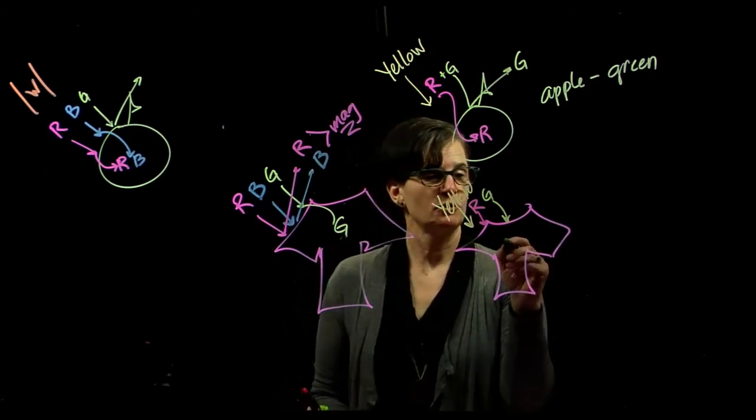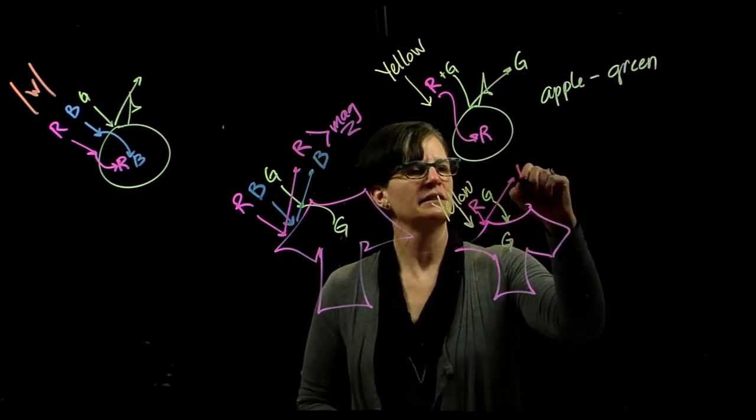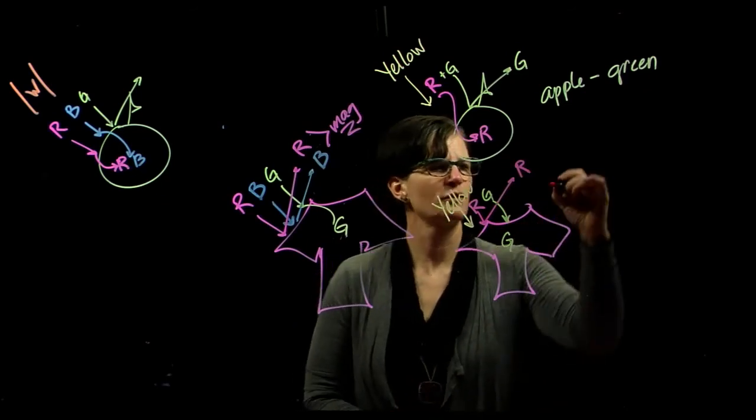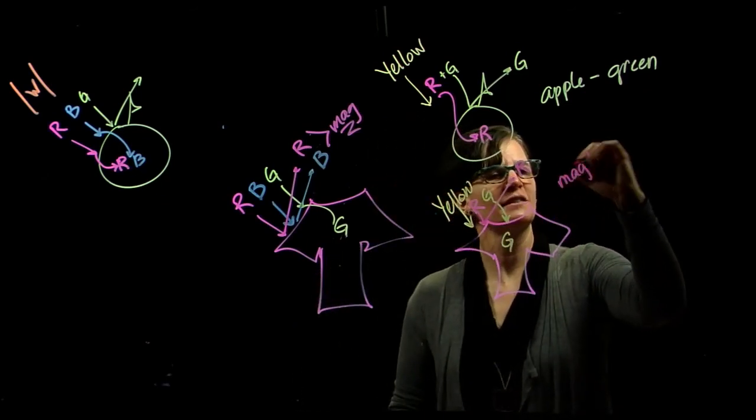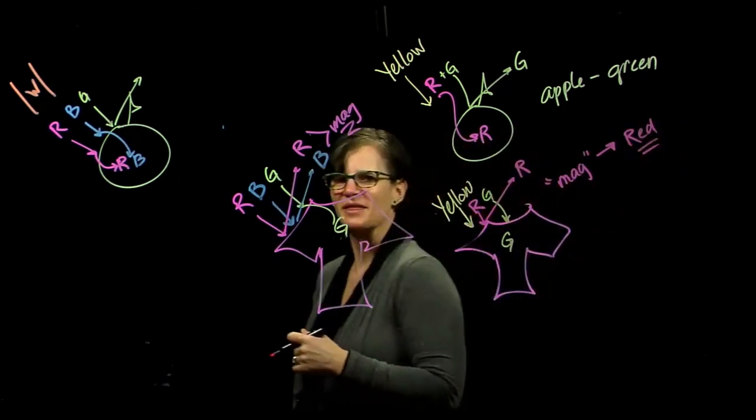A magenta shirt absorbs green light, but it reflects the red light, and therefore this magenta shirt becomes red when I present yellow light with it.